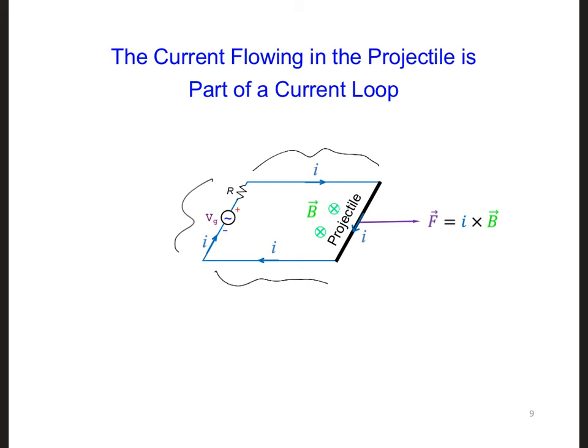Now, we want to launch the projectile, so we want to allow the projectile to move while still keeping it part of the loop. So we want it to be able to move in this direction. How might we achieve this?